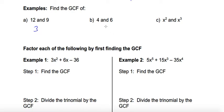In part b, what is the greatest common factor for 4 and 6? What is the largest number that will divide evenly into both of these numbers? In this case it's going to be 2, because 2 will divide evenly into both 4 and 6.